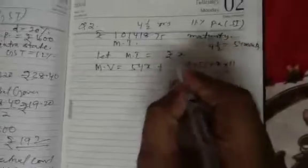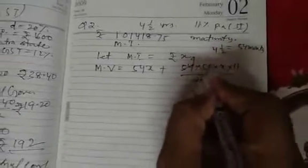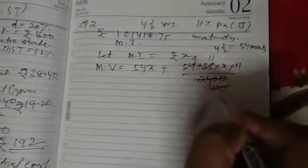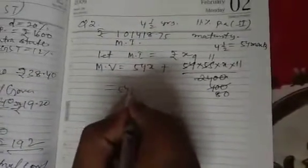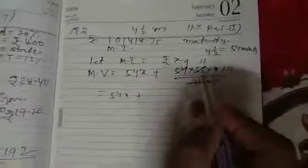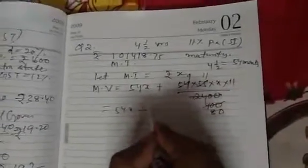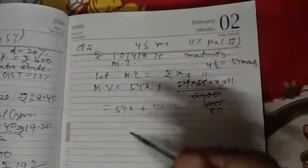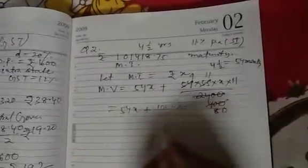Therefore, the formula we have 54 into X plus 54 into 55 into X into rate is 11 by 2400. And by cancelling 969, this is 6400. Then again by cancelling by 5, which is 11, 5, 80. We will be getting, this is 54X plus, multiply this by 99 into 11, you will be getting 1089X by 80.